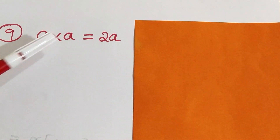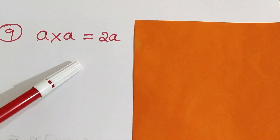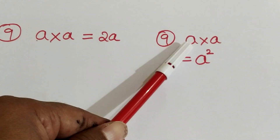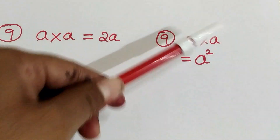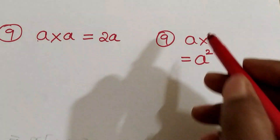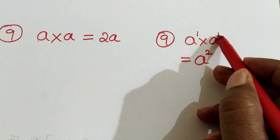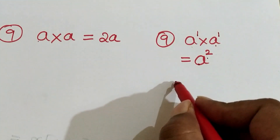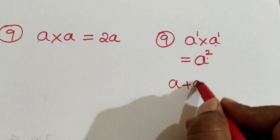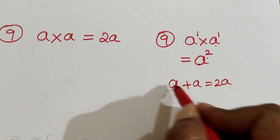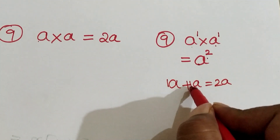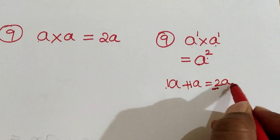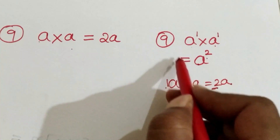Ninth one: a into a is 2a — this is a wrong procedure, because a into a is a squared. When bases are the same, we add the powers. Since there is no written power, we assume the power is 1. So a to the power 1 times a to the power 1: base stays a, and 1 plus 1 gives a squared. But note: a plus a can be represented as 2a, since the coefficient of a is 1 plus 1 equals 2.